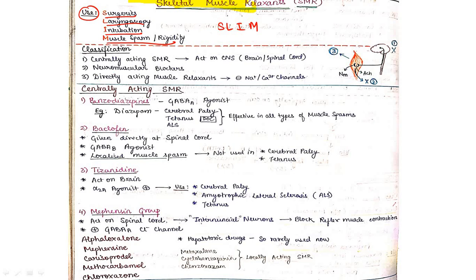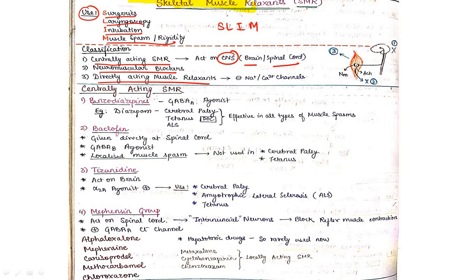The classification of SMR has three groups: first, centrally acting SMR; second, neuromuscular blockers; and third, directly acting muscle relaxants. Centrally acting SMR act on the CNS — brain or spinal cord. Neuromuscular blockers act on the neuromuscular junction. Directly acting muscle relaxants directly inhibit sodium or calcium channels.